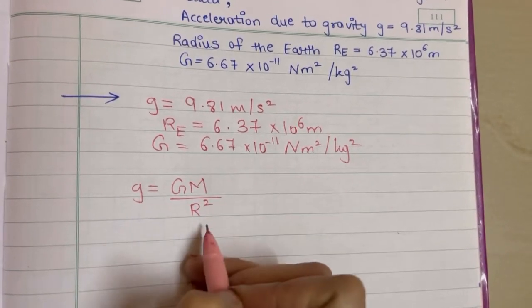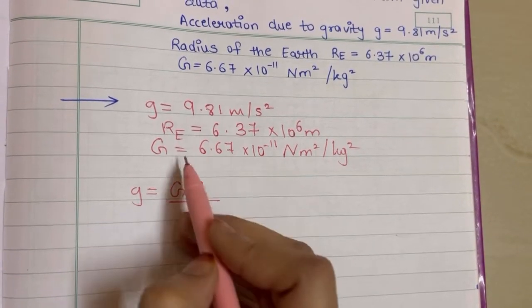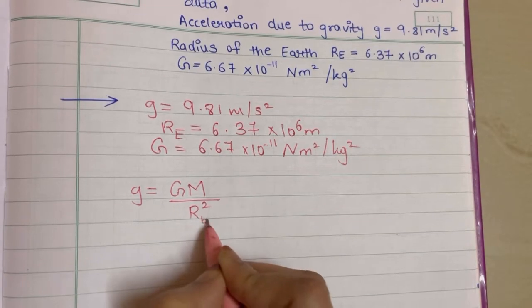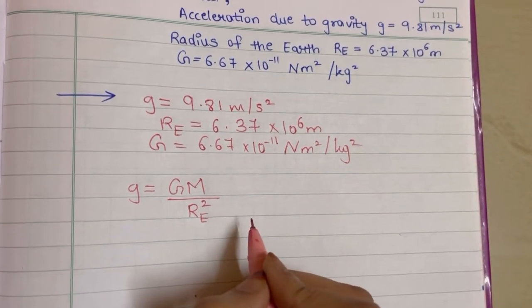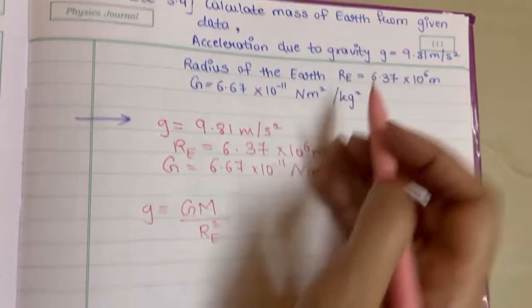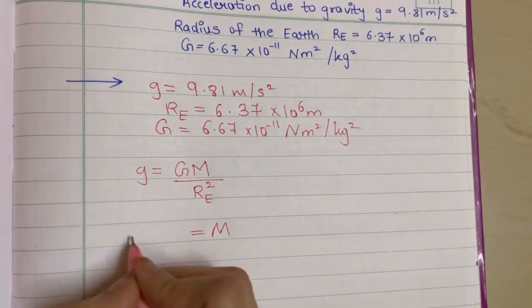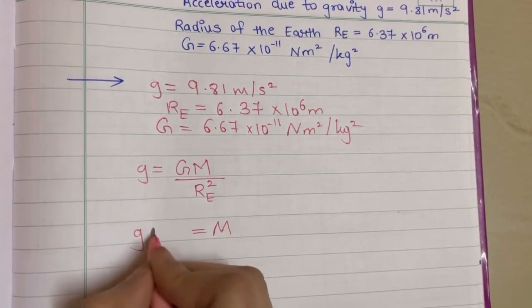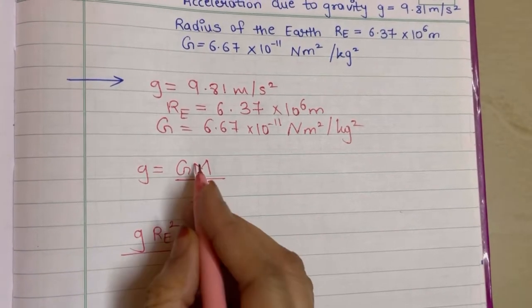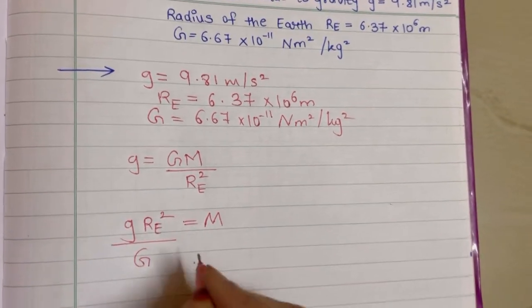Now here the symbol for r, that is the radius of the Earth, is given as Re, so even you will take it as Re in your formula. They are asking you to calculate mass of Earth, that is capital M. If you keep M over here, g, Re square goes in the numerator on the left hand side and G comes in the denominator.